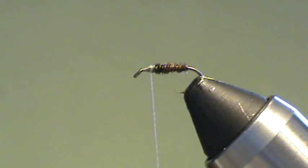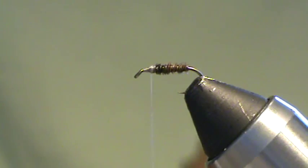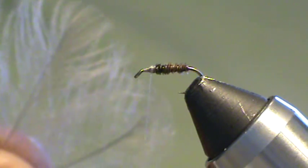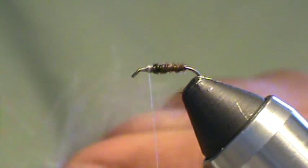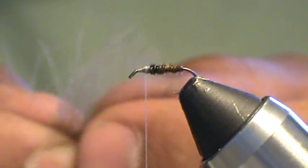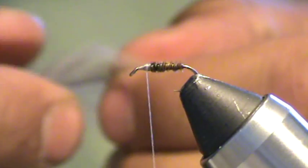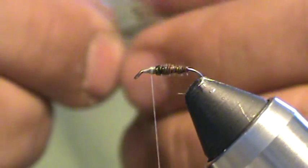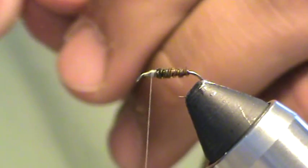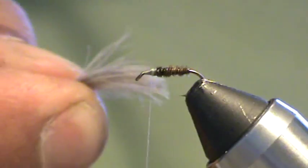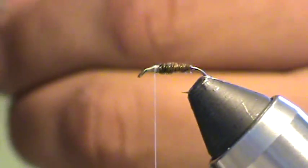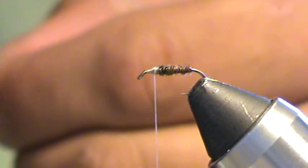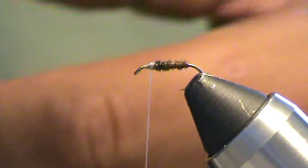Next thing to go on is a couple CDC plumes. I'm going to use two for this size 16. Just lie them curved side together with the tips matching and the stems right on top of each other. Take a second to get it right. Once you get it lined up, stroke all the fibers back and make yourself a nice little wing. You want the curved part of the wing to be down if you can help it. Just take your time, be patient.